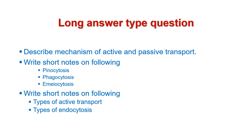Next question is: write short notes on the following — number one, types of active transport; number two, types of endocytosis. That is all about the questions. Do all the questions and send your answers to your teacher in your college. Good luck. Thank you.